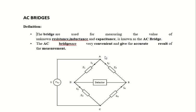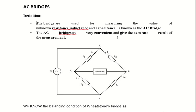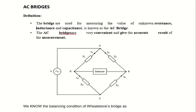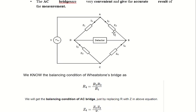Bridges used for measuring the value of unknown resistance, inductance, and capacitance are known as AC bridges. In a DC bridge you can only measure resistance, but in an AC bridge you can measure unknown resistance, inductance, and capacitance. This is the circuit of an AC bridge.